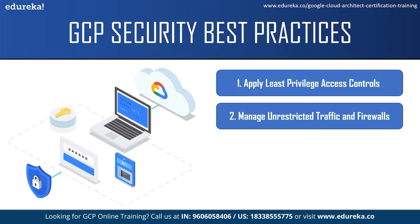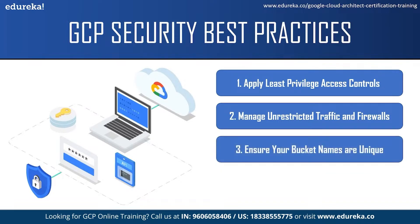The next best practice is ensuring your bucket names are unique across your whole platform. It is recommended to append random characters to a bucket name and not include the company's name in it. For example, a bucket name could be something like product-logs-b7b12b365. This makes it harder for an attacker to locate a bucket in a targeted attack.